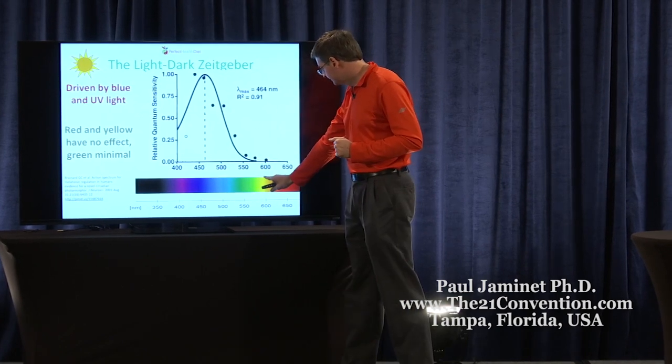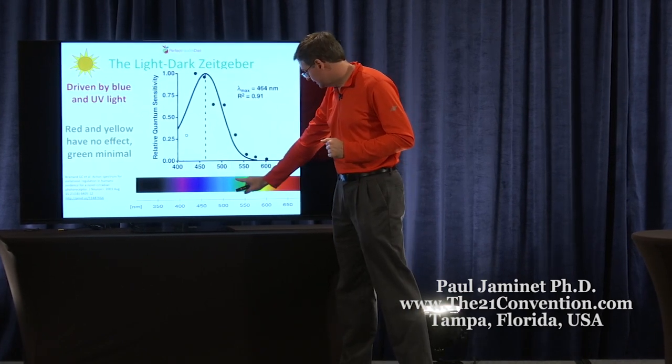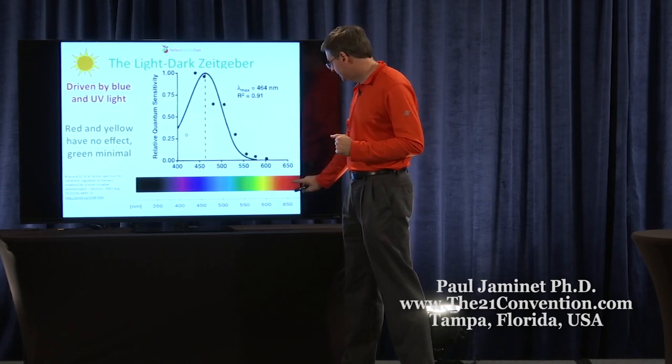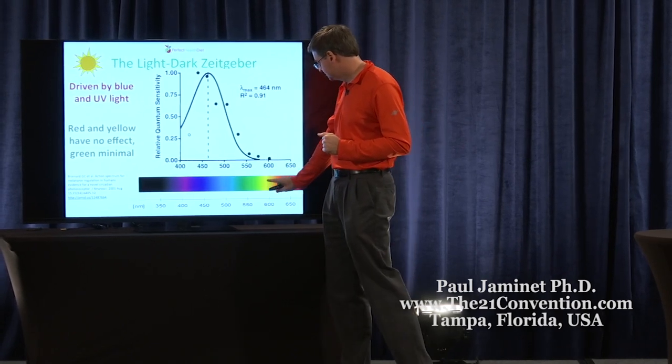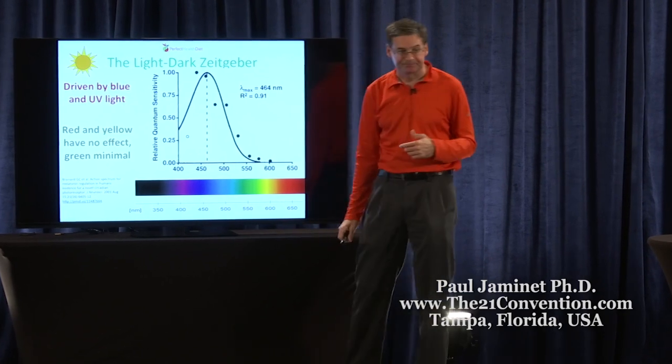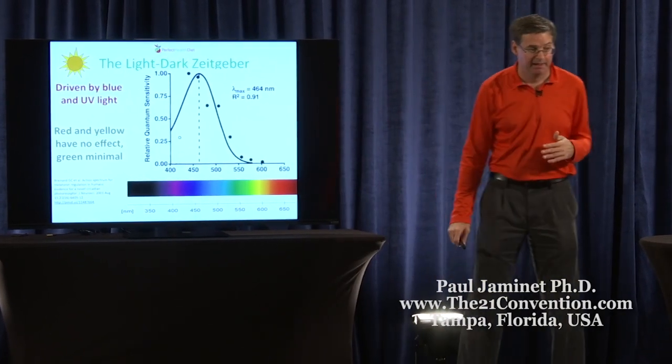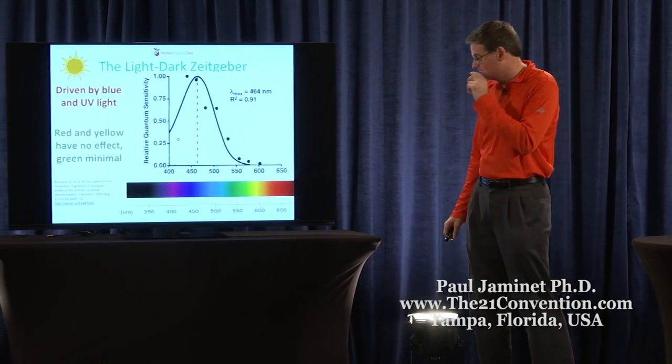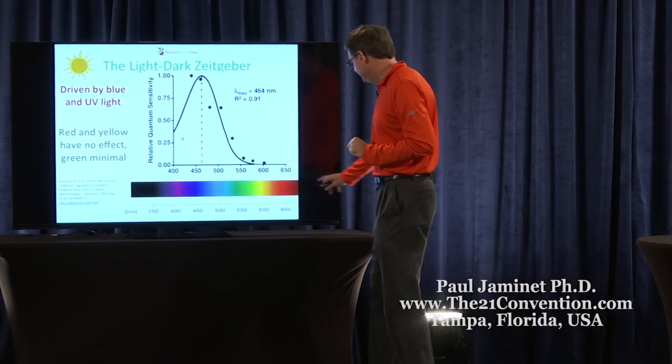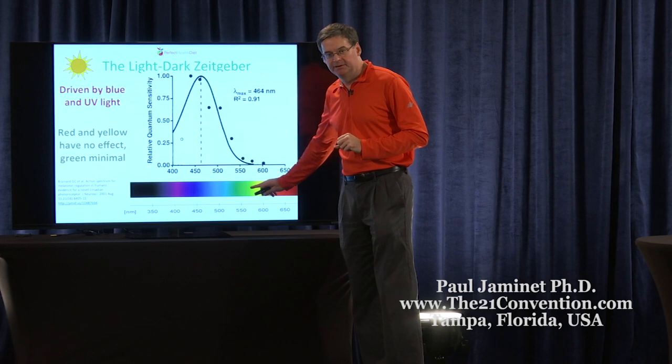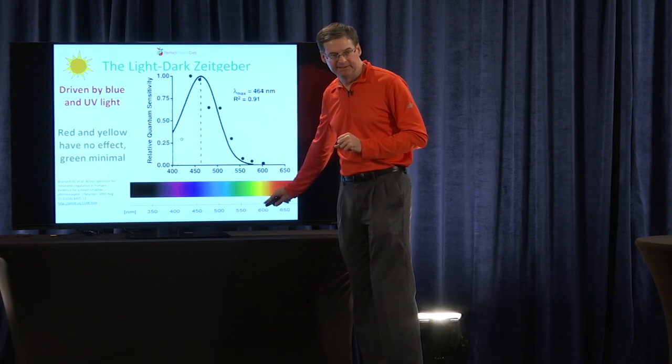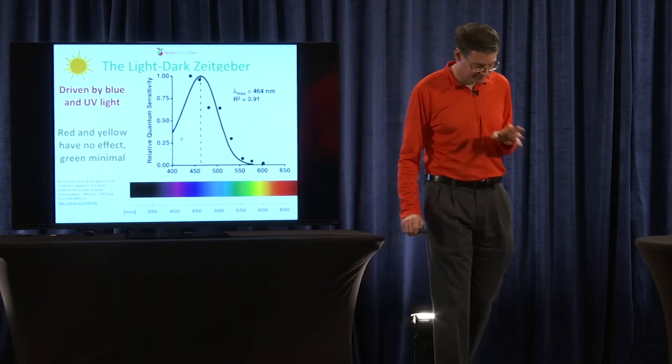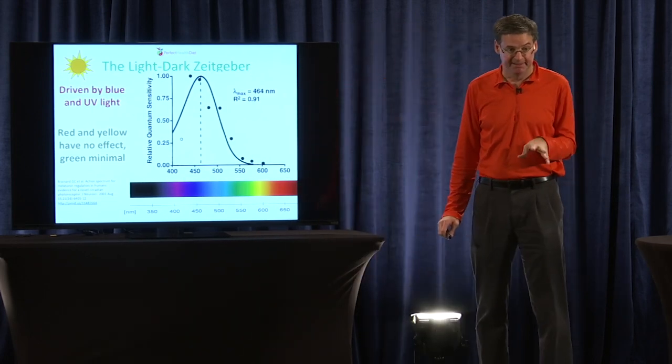And everything from about here on, yellow up, can affect it somewhat. But basically, red, orange and yellow with no green has no effect on the central clock. So what does that mean? In the nighttime, you can use red, orange, yellow light with no problem. It won't have any effect on your circadian rhythms. It won't tell your brain that it's daytime.